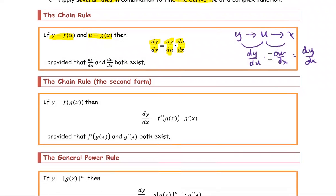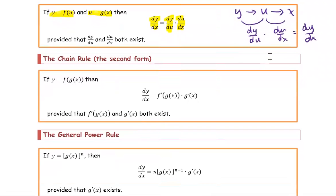Another form of the chain rule — we call it the second form — which you should know so that when you find a derivative, whatever is appropriate for that problem, just go for it. Based on this book, they call it the second form because the function is in a composite function form as f composed with g. The f is called the outer function and the g is called the inner function.